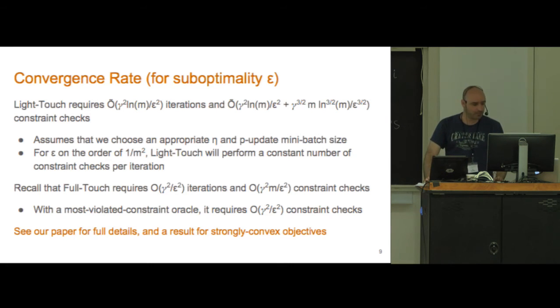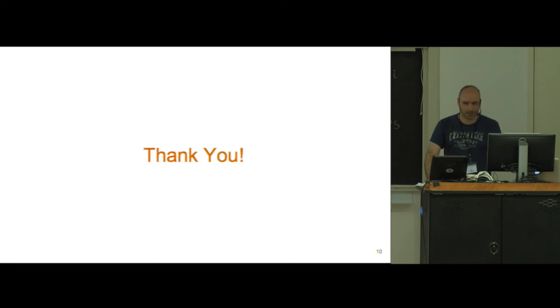We see that we have achieved what we were looking for, where we're finding an algorithm that checks fewer constraints than gamma squared m over epsilon squared but more than gamma squared over epsilon squared. Please see our paper for full details. We have some experiments and also a discussion of some issues that arise in practice when you're using this algorithm. Thank you.